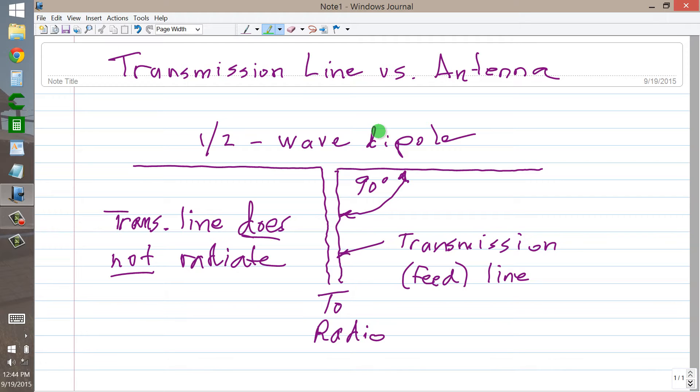The other question or the other part of the question involved current loops and nodes. Does a transmission line have current loops and nodes?